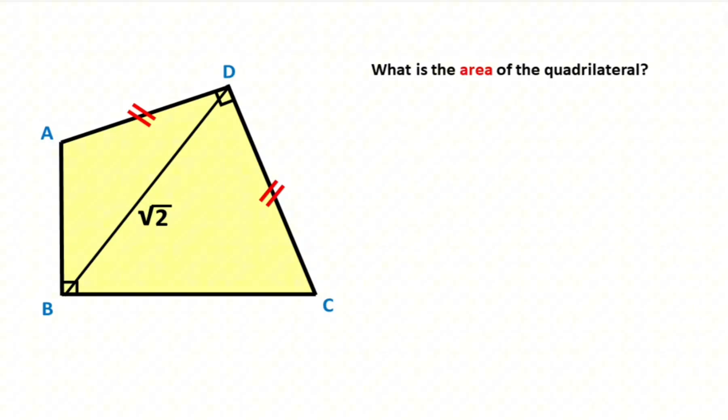Hello everyone, in this video we have one quadrilateral. These two lengths are given as equal and these are given as 90 degrees. This length is given root 2. The question is, what is the area of the quadrilateral?